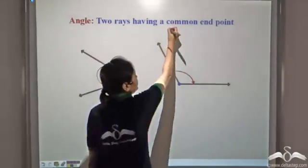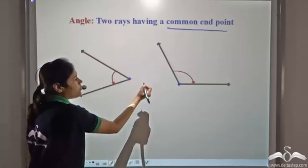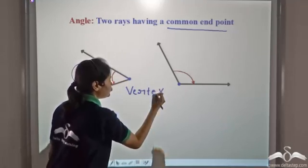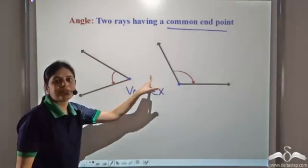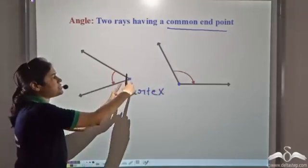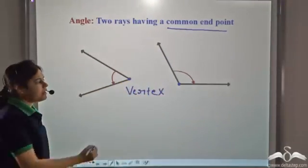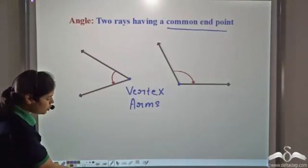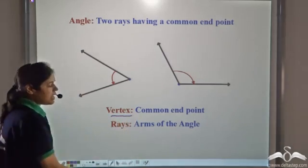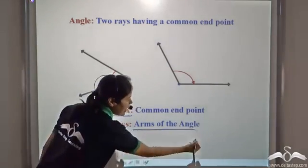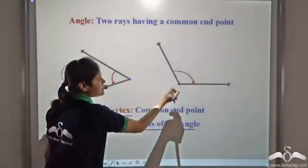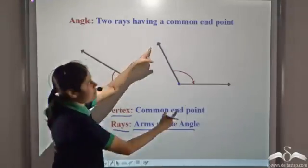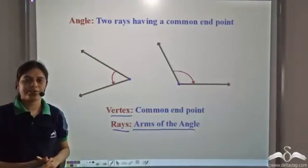This common end point is called the vertex of the angle. The rays which come together to form the angle are called the arms of the angle. So the common end point is the vertex and the rays are the arms of the angle. In this case, these are the vertex, these two are the arms of this angle, and these two are the arms of this angle.